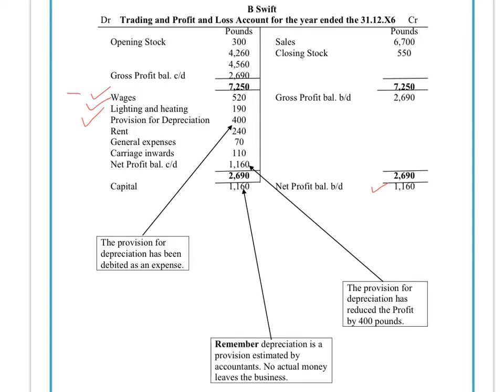Unlike these expenses, the reason we call it a provision for depreciation is that a bill doesn't have to be paid out of your bank account. Wages staff obviously receive that into their bank account, so the money would leave your business bank. Lighting and heating has to be paid to the utility company, but there is no provision for depreciation company. We are simply allowed to take this away because it is a legitimate cost in terms of the fixed assets reducing in value because you've used them over the year to create the products that you're selling.